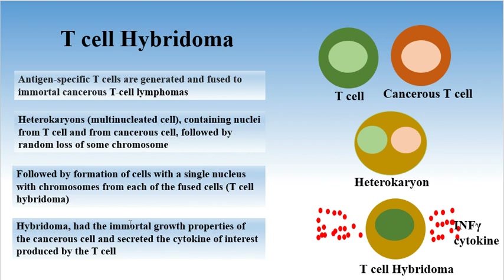The T-cell hybridoma has the immortal growth properties of the cancerous cells and secretes the cytokine of interest. For example, they can be activated to produce interferon gamma.